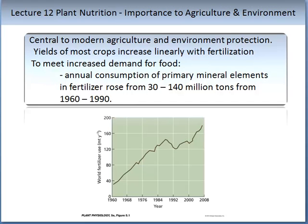Fertilisers and agriculture have been very much integrated into modern life. Without the ability to fertilise and produce yields of such high tonnage, we would not be able to evolve as a human race as well as we have. Yields of most crops increase linearly with fertilisation. To meet increased demand for food, annual consumption of primary mineral elements in fertiliser rose from 30 to 140 million tonnes from 1960 to 1990, reflecting its importance in modern day agriculture.